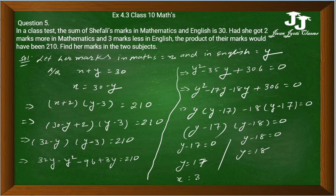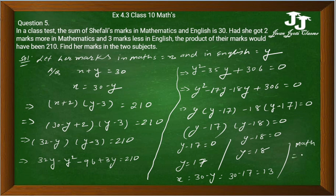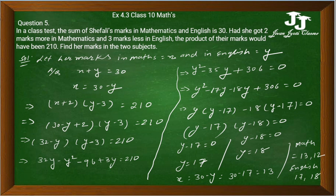x is equal to 30 minus y, तो 30 minus 17 equals 13, and 30 minus 18 equals 12. तो दो answers आ रहे हैं: अगर Math में 13 आया तो English में 17 आया, और अगर Math में 12 आया तो English में 18 आया।